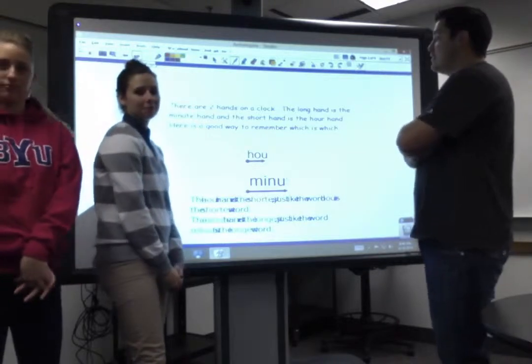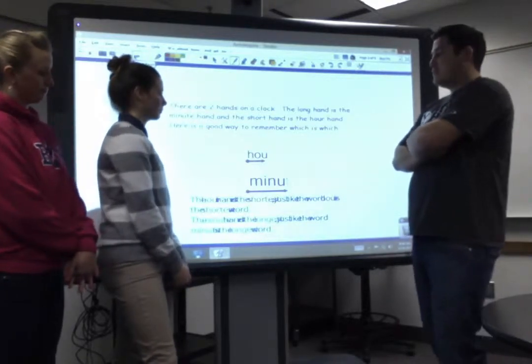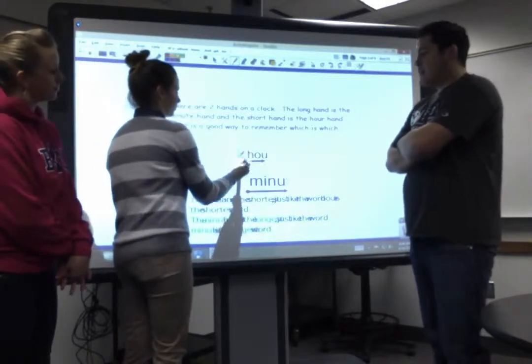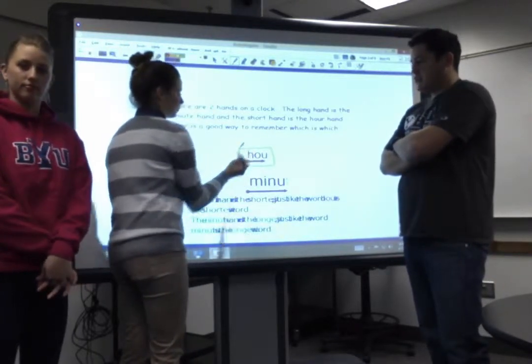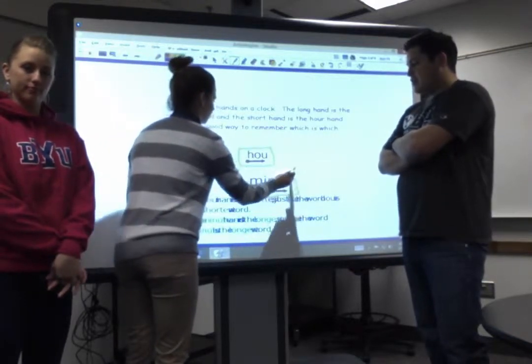There are two hands on the clock. The long hand is the minute hand, and the short hand is the hour hand. Here's a good way to remember which is which. You have hour, which is a lot shorter, shorthand. And then you have minute, which is a longer word, which is a longer hand.